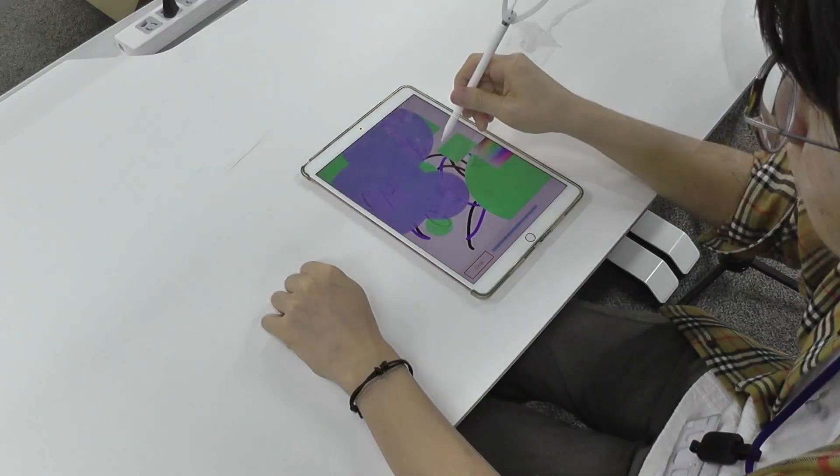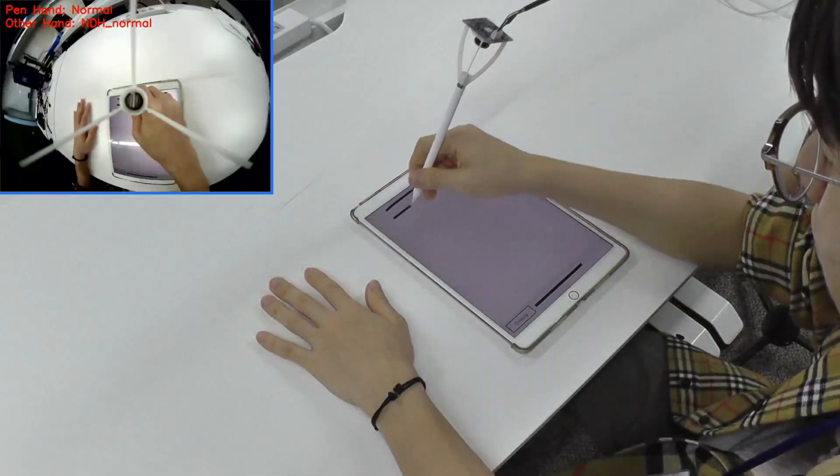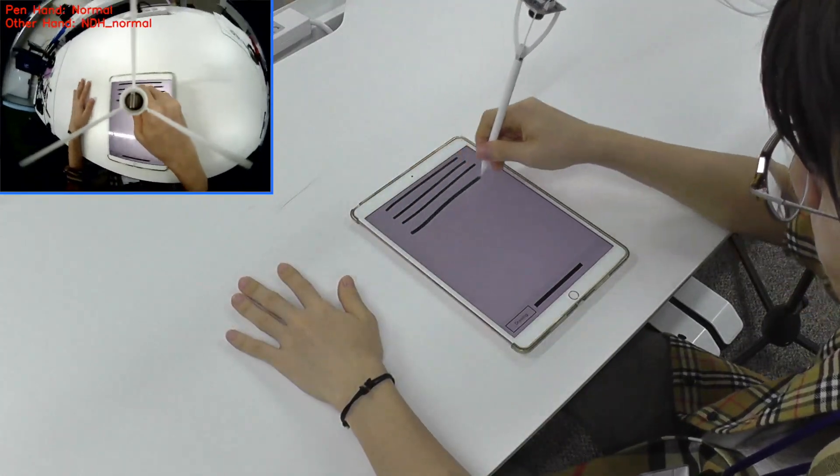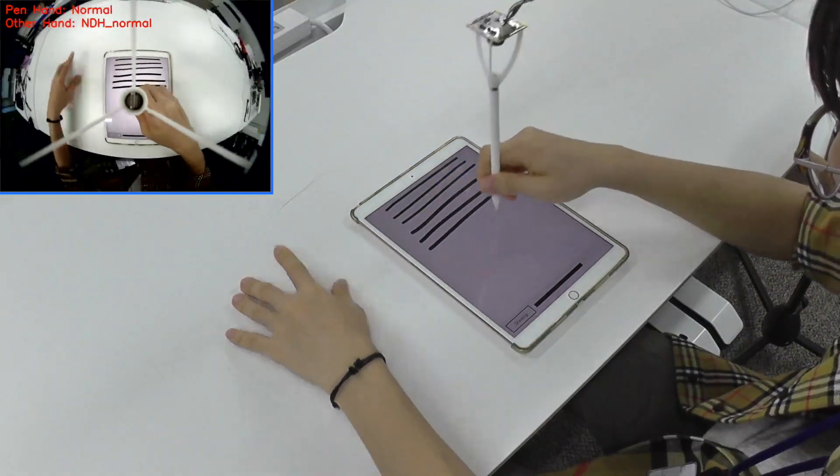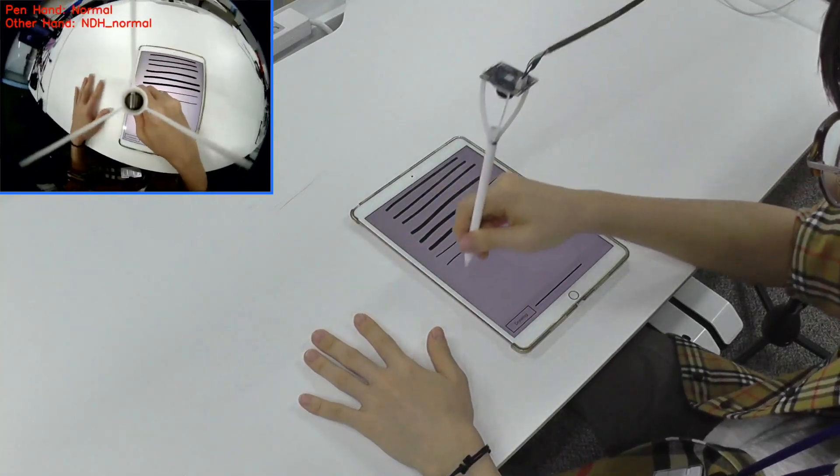Bimanual actions are also possible, such as tapping the wrist to clear the screen. Both hands can further be used to adjust continuous parameters. For example, the index finger of the other hand can be rubbed against the pen with the distance between the finger tip and the pen mapped to the value, in this case stroke thickness.